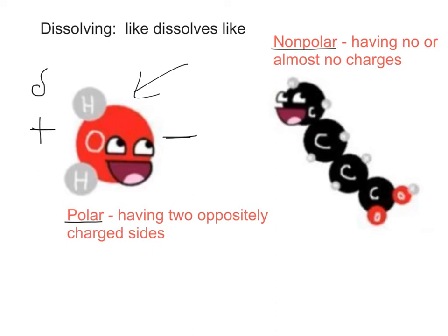This results in water molecules clinging to each other. They cling to each other because one side of each molecule has a positive charge and the other side has a negative charge. And you may have heard that opposites attract. So every water molecule has the ability to attract a neighboring water molecule.